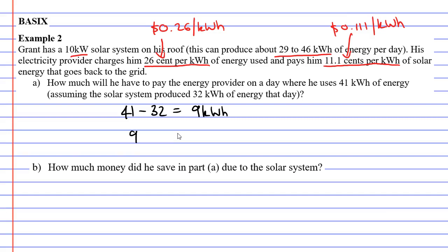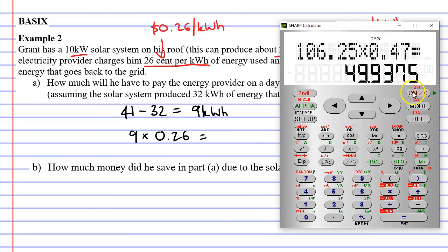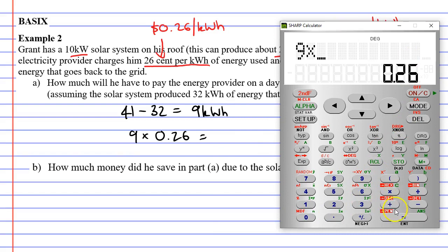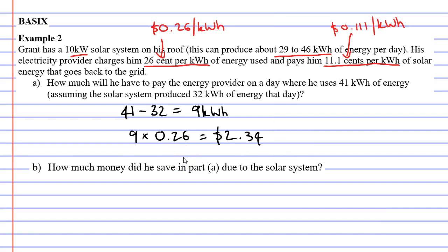So what we're going to do is take our 9 and multiply it by the charge of 26 cents, or by $0.26. I don't think that's going to be a lot of money. Let's check it out. 9 times 0.26 equals $2.34. So he gets charged $2.34 for that day's electricity usage.